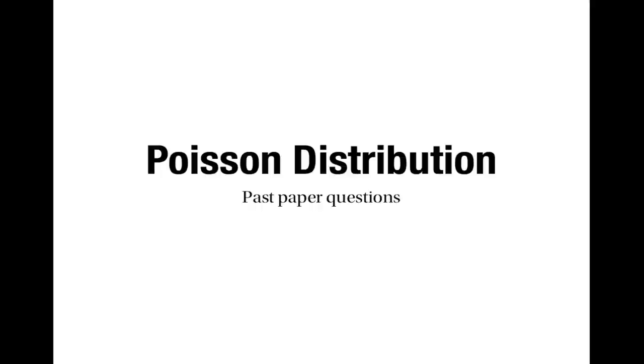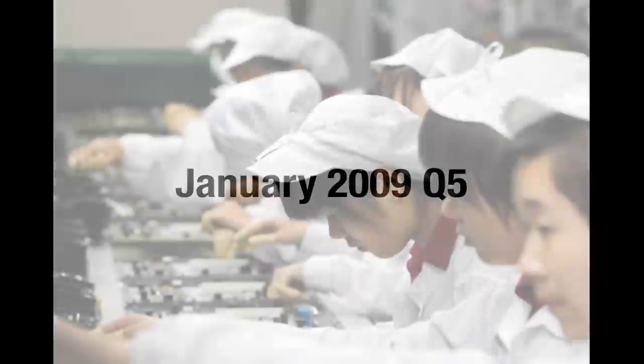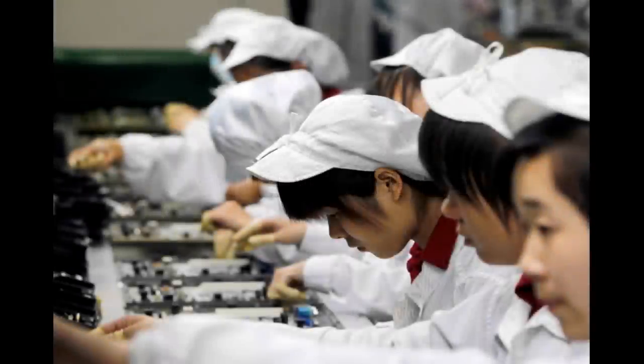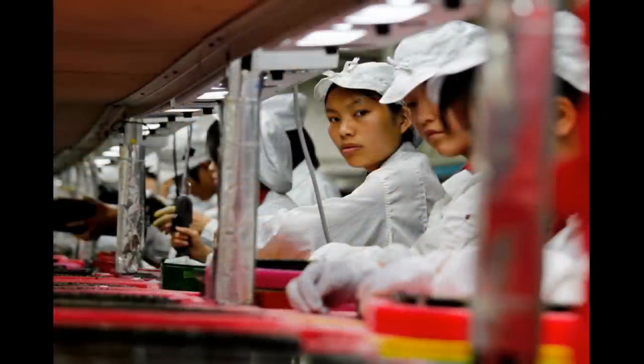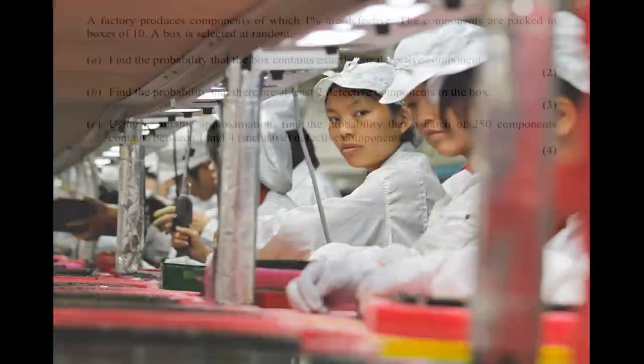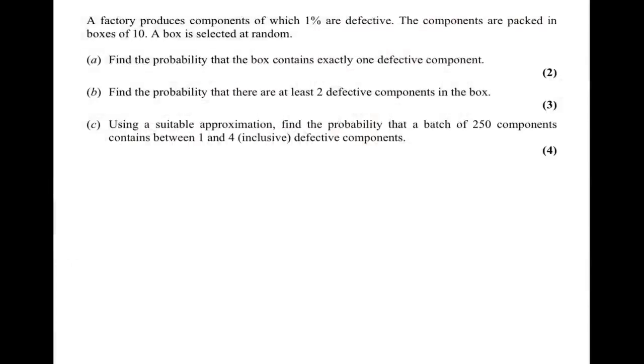This video looks at some past paper questions about the Poisson distribution. The first question is number five from the January 2009 paper. It's about a factory in which components are being made.